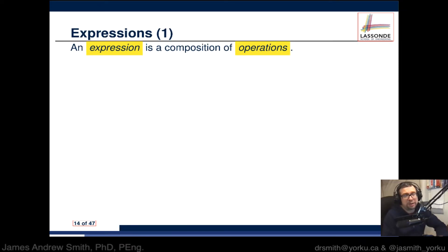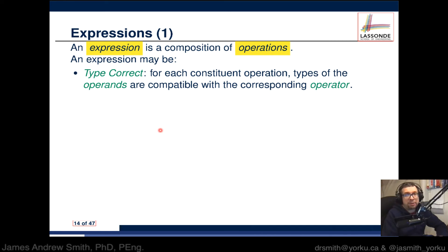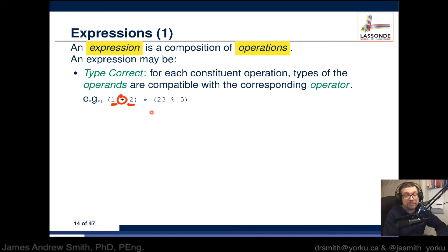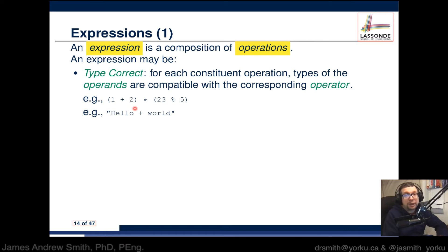You can combine operations into what we call expressions. An expression is a composition of operations, and an expression should be type-correct — meaning for each constituent operation, the types of the operands are compatible with the corresponding operator. So if you're adding things together, they should be compatible with the addition operator. Here we have integers added together: one integer is an operand, another integer is an operand, compatible with the plus operator. You can concatenate two different strings as well — that would also work.